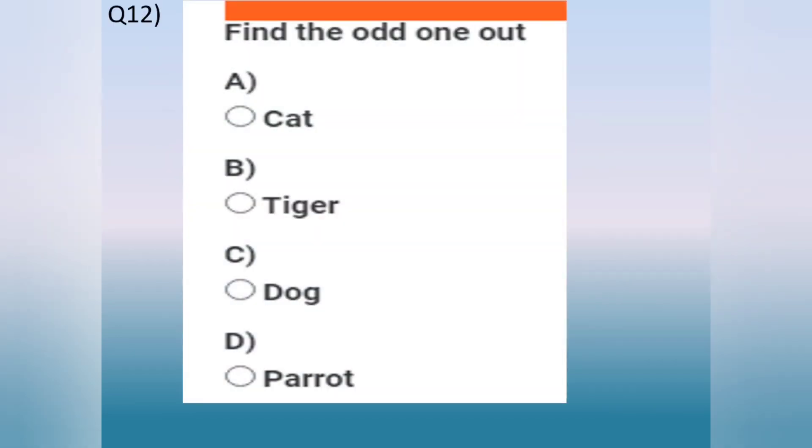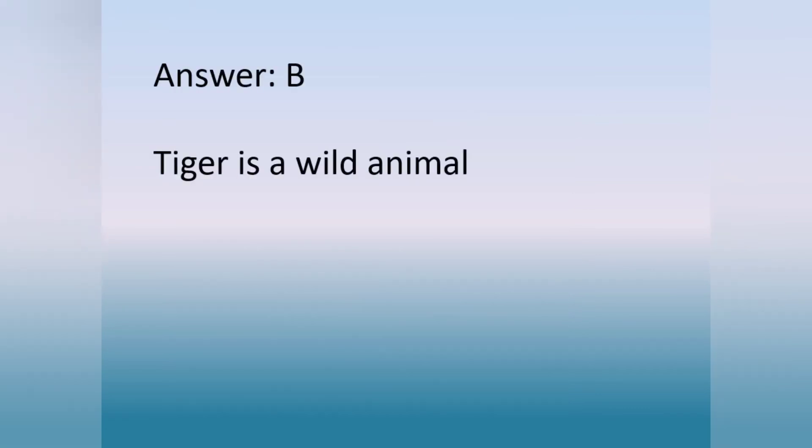Question number 12. Find the odd one out. Option A. Cat. Option B. Tiger. Option C. Dog. Option D. Parrot. The answer is option B, as tiger is a wild animal.